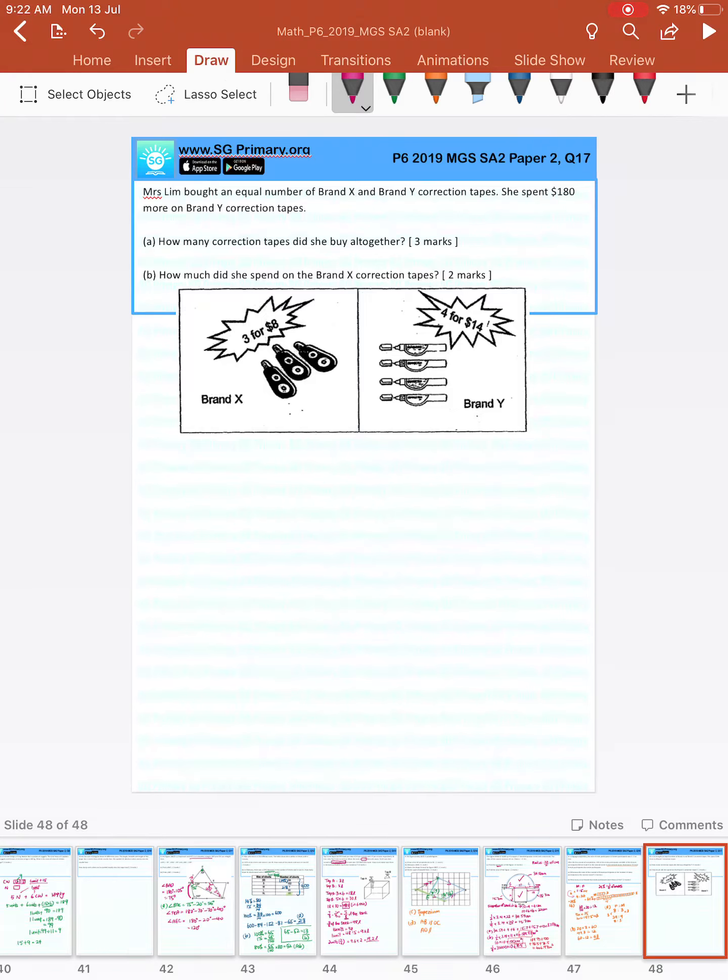Question 17. Mrs. Lim bought an equal number of Brand X and Brand Y correction tapes. She spent $180 more on Brand Y correction tapes.